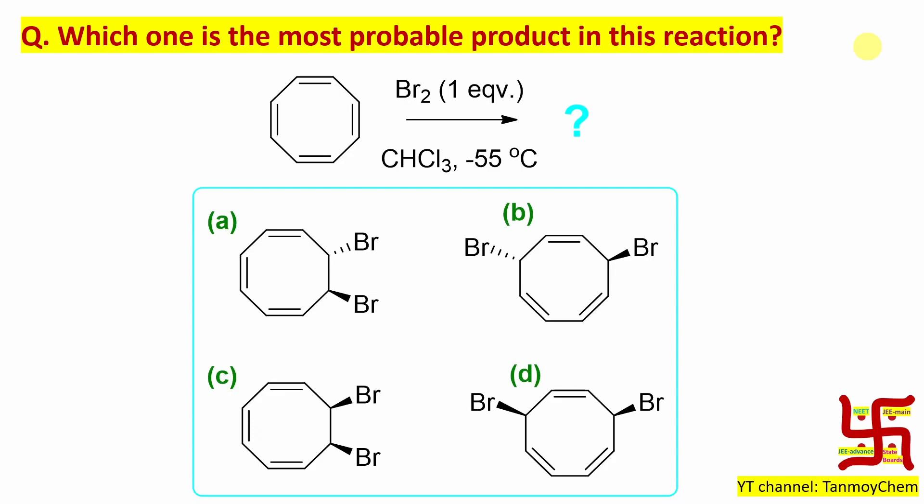Now the question is, which of the molecule is actually the most probable product of this reaction? Four options are provided. If you look at this molecule, the reaction condition is one equivalent of bromine is given. Solvent is chloroform, temperature is minus 55 degrees centigrade. So you can expect that milder reaction condition. And which reaction is expected to occur on milder condition? That is a selective reaction. Before going to details, we need to know a little bit about this molecule.